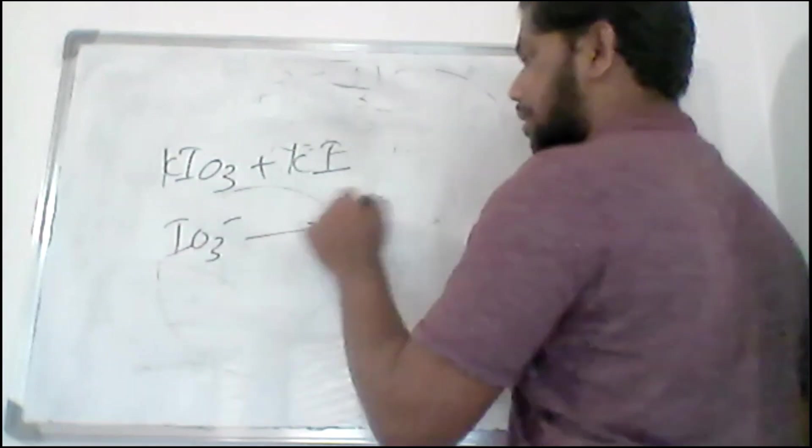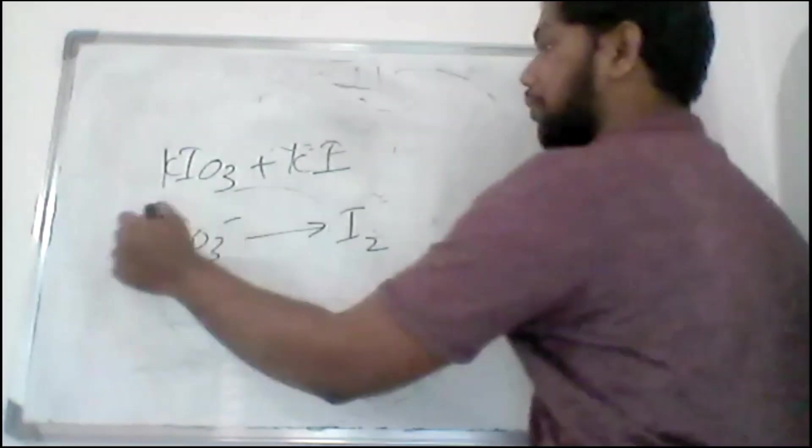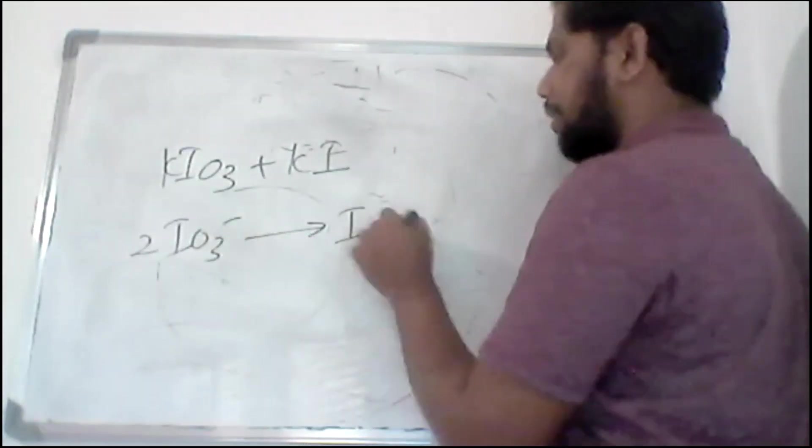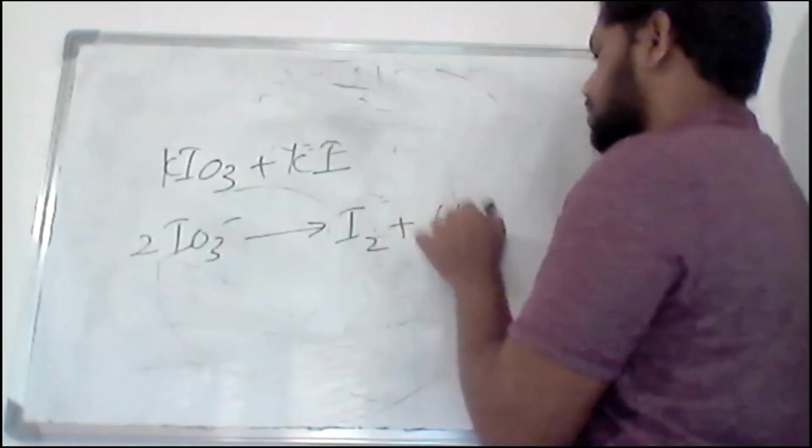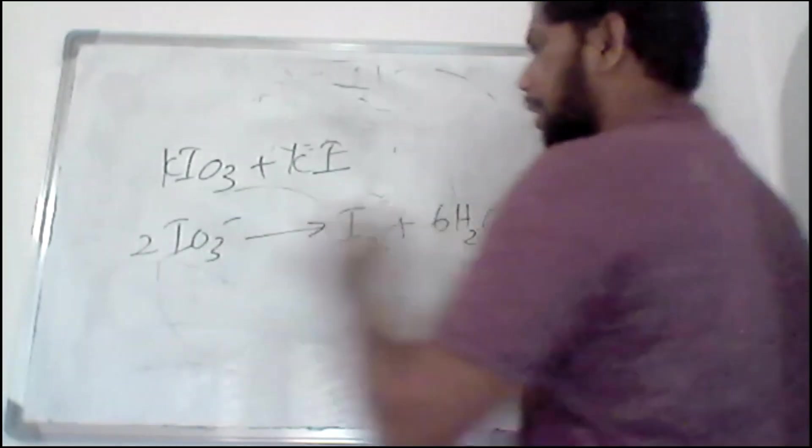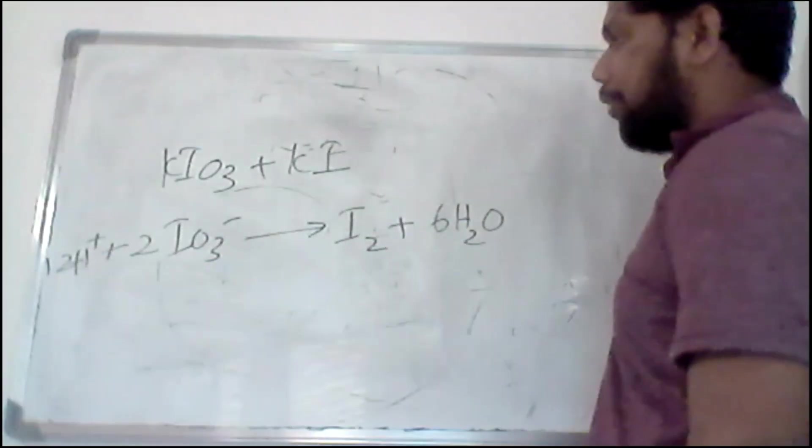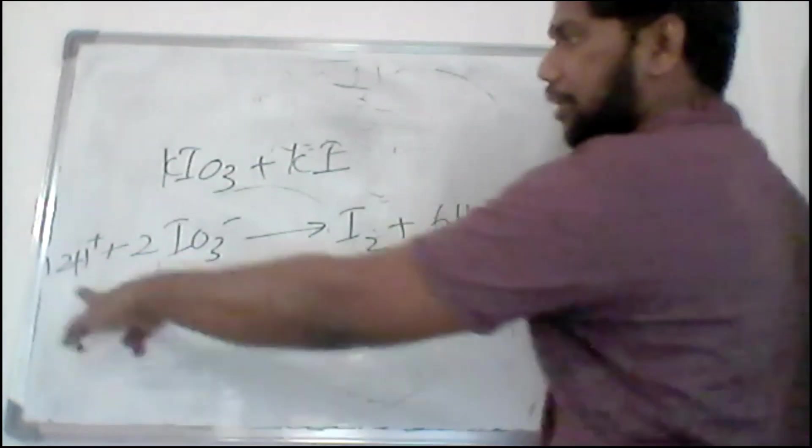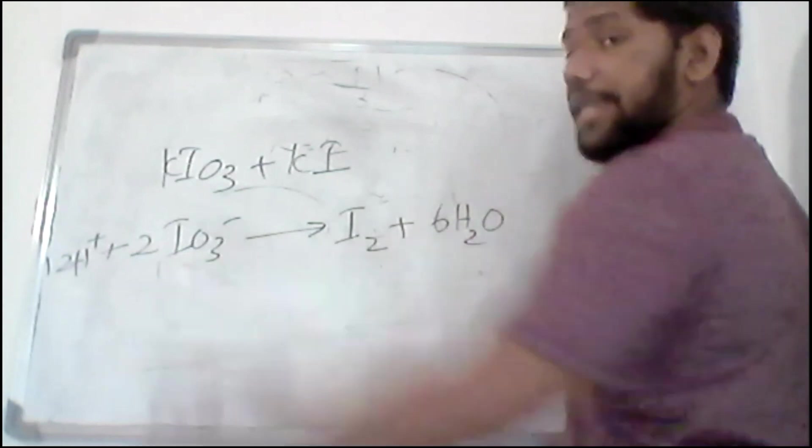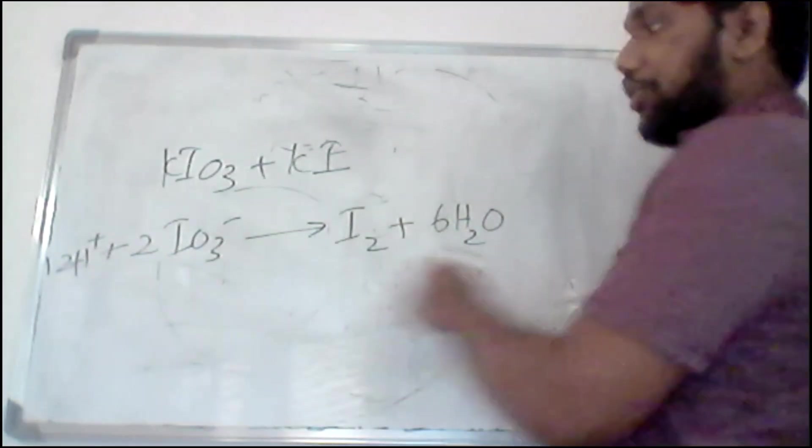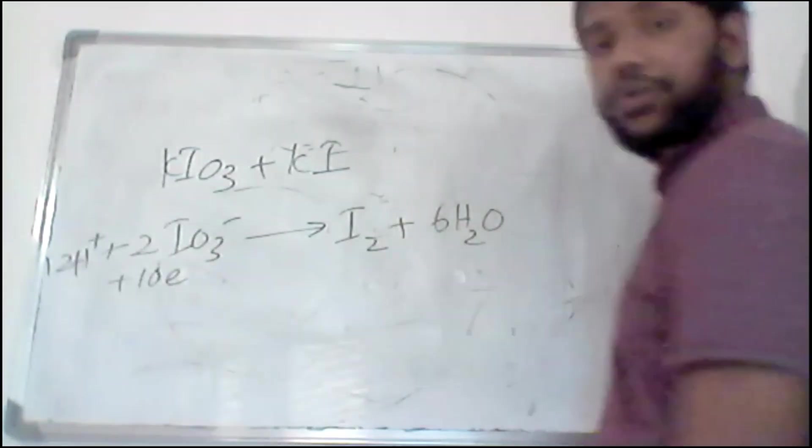So what is happening here? IO3- gets reduced to I2. So you have to balance this one. So I can put 2 I- to balance iodine, and here to balance water. So there are six oxygens. So 6H2O and 12H+, right? And then to balance the charges. So here 12H+ and 2I-. So there is 10H+, but here there is no charge. So I can add 10 electrons here to neutralize the charges.